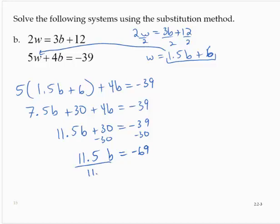Dividing through by 11.5, b equals negative 6.